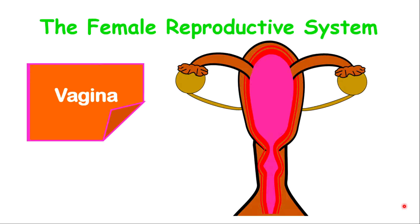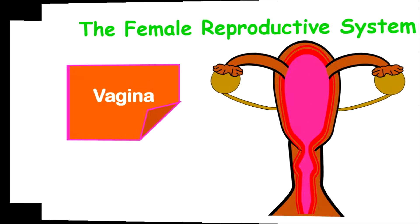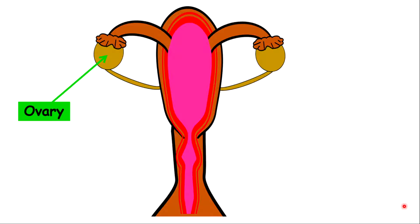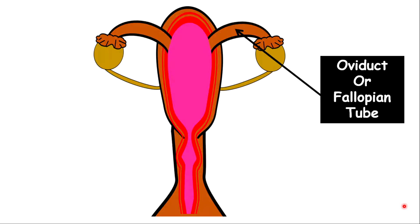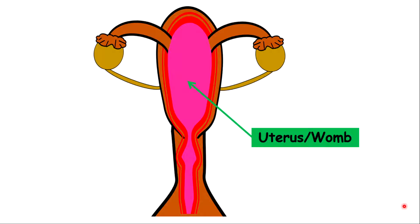Before I go into these structures, let us look at the general structures of the female reproductive system. We have the ovary, we have ovarian ligament, we have the fimbriae, we have the oviduct otherwise called the fallopian tube, we have the fundus, and the fundus is the uppermost part of the uterus. We have the uterus, otherwise called the womb.